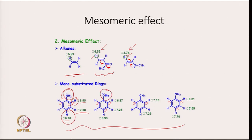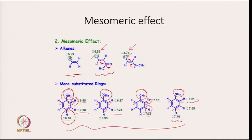OCH3 also has a plus-M effect, so protons at ortho and para positions have lower chemical shift compared to the meta position. CH3 is an electron-donating group with a plus-I effect, making protons more electron-rich at ortho/para. NO2 is an electron-withdrawing group with a minus-M effect, making protons less electron-rich at ortho and para positions, giving them higher chemical shift.